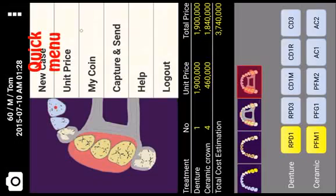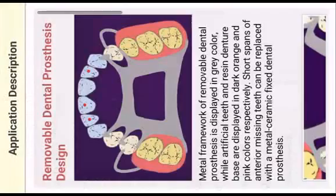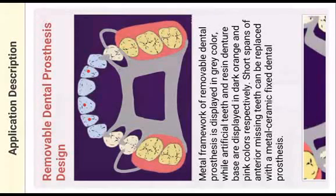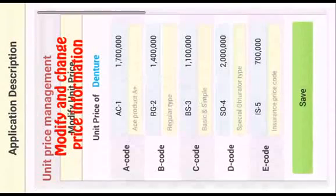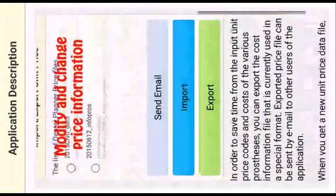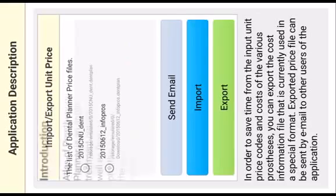The quick menu is located at the top of the page. There is a help menu for removable dental prosthesis. Users can modify the unit price. You can also export and import the unit price information.